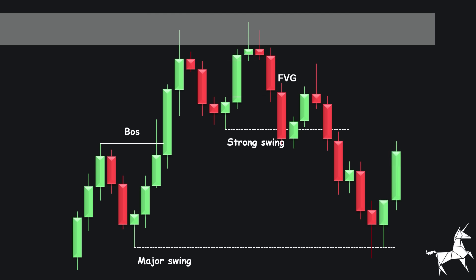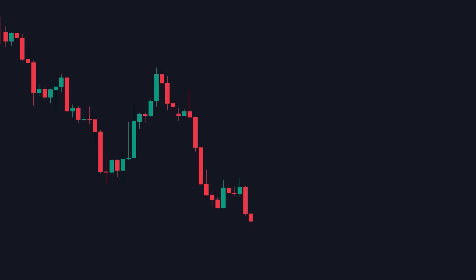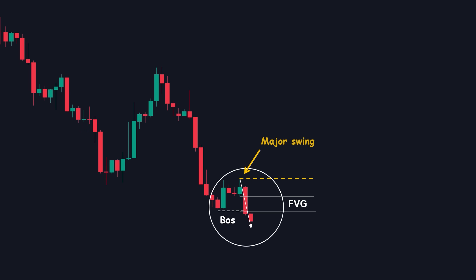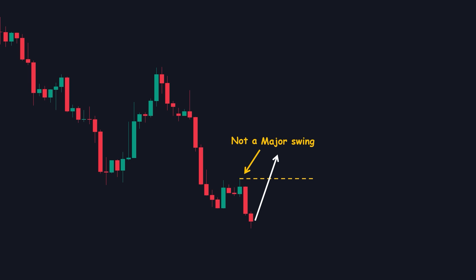Now let's explore the third and final criterion that helps us identify a major swing: the distance pushed by the price. Look at this example. The latest move has created an imbalance and broken the structure level to the downside, so by definition it is a major swing low. Does breaking above this high represent a valid change of character? The issue with this move is that it lacks sufficient distance pushed by the price. If you measure the previous impulsive movement, that is over 60 pips, while the recent one is only 20. Therefore, this high does not qualify as a major swing, and breaking above it does not indicate a valid change of character.